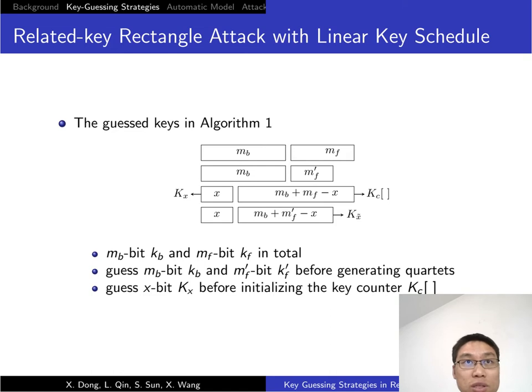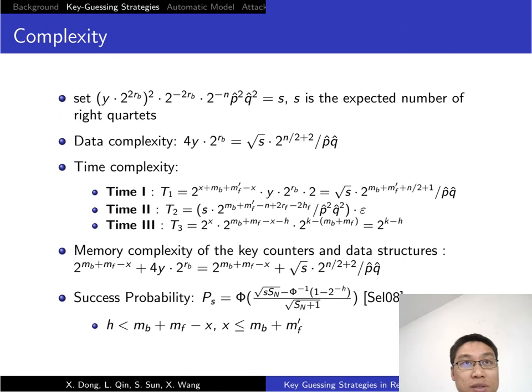Totally, we have to guess MB plus MF plus x KBs. Before generating the quartets, we guess MB plus MF bit key. To reduce the memory of key counters, we guess x-bit Kx before initializing the key counter. Computing the expected number of right quartets, we denote it as S. The data complexity is 4 times 2 to the 2RB. We have three time complexities as T1, T2, and T3. We will mainly trade off between these three time complexities. The memory complexity includes the key counters and data structure.